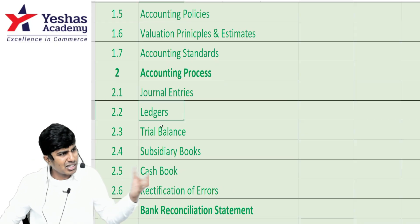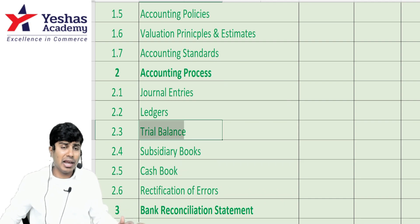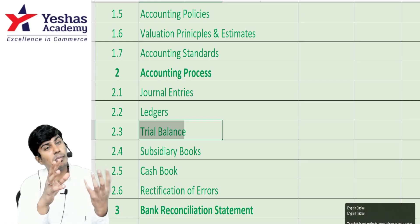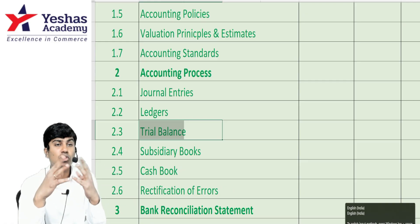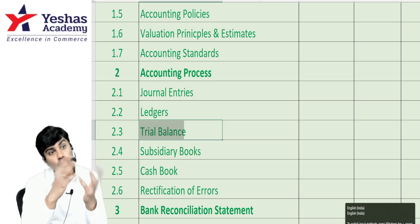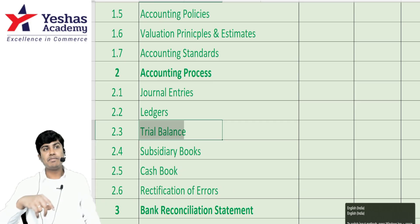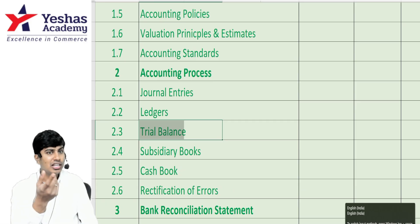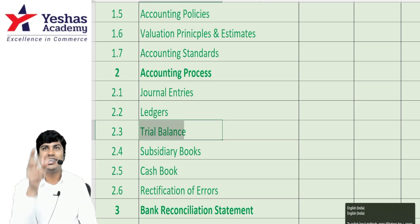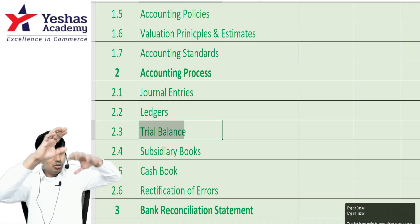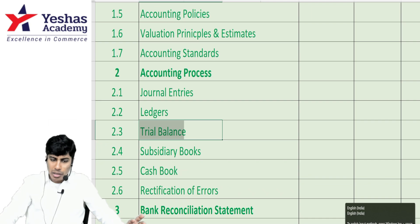For trial balance, don't ignore the types of trial balance. Don't ignore trial balance prepared under the total method, the balance method, and the total-and-balance method. They can sometimes ask a question where an incorrect trial balance is given and you need to rectify it — for example, debtors amount given on the credit side, creditors on the debit side, or closing stock incorrectly included. You need to redraft the corrected trial balance.